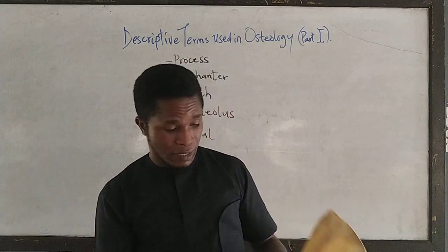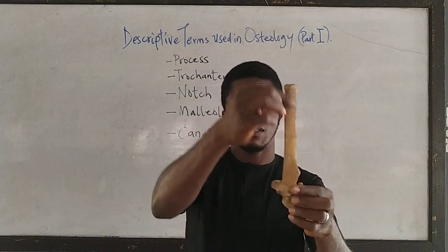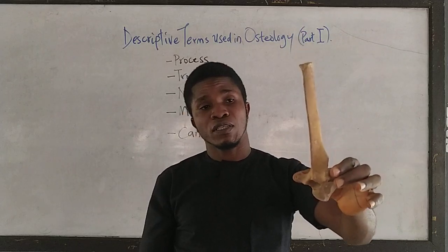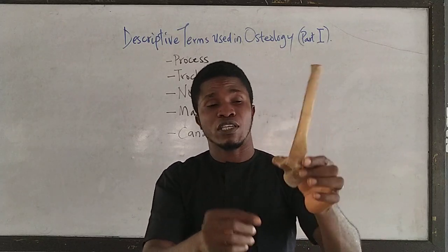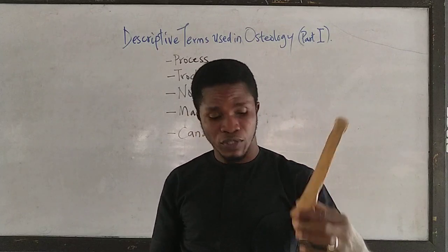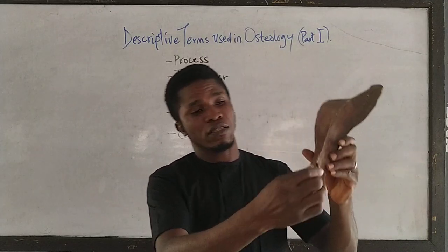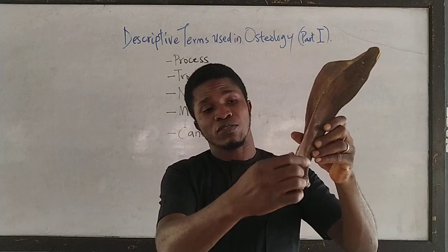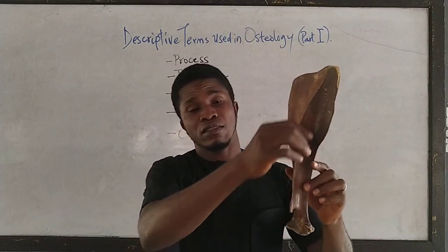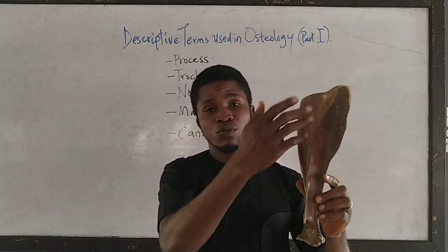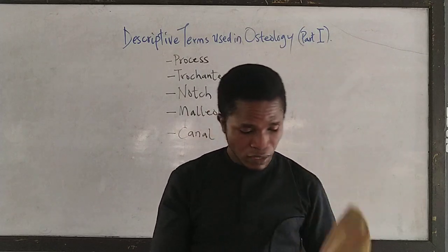An example is the spinous process, found on the thoracic vertebrae. This is the spinous process — attaching to the arch of this thoracic vertebrae is a very long spinous process. Another example of a process is the acromial process, which is attached to the spine of the scapula. The spine divides the lateral side of the scapula into two unequal parts, and on the ventral aspect of the spine of the scapula is the acromial process.